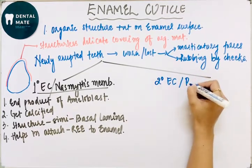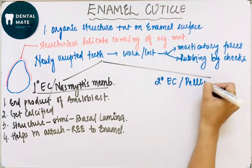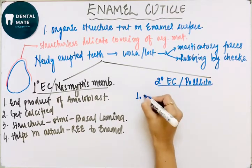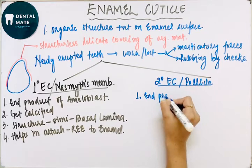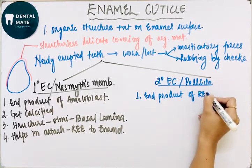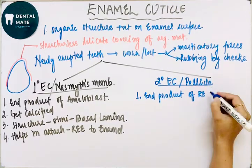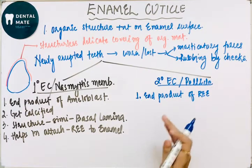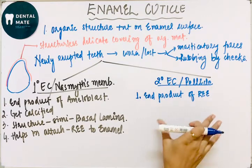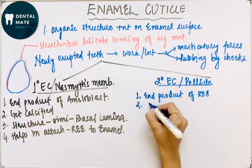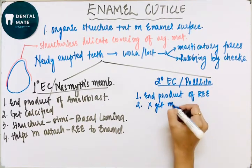The secondary enamel cuticle is also known as pellicle. It is the end product of the reduced enamel epithelium. Unlike the primary enamel cuticle which gets calcified, the secondary enamel cuticle does not get mineralized.